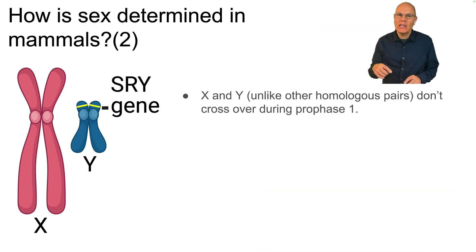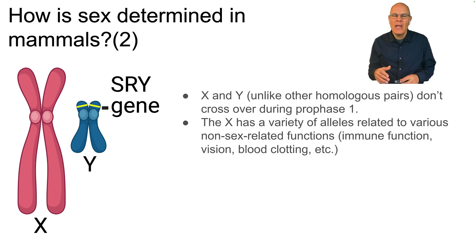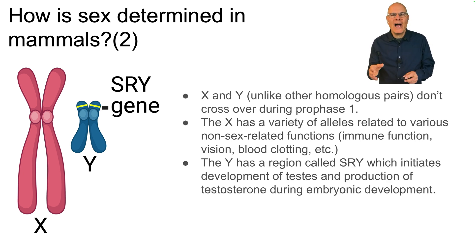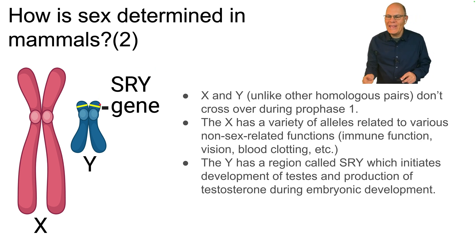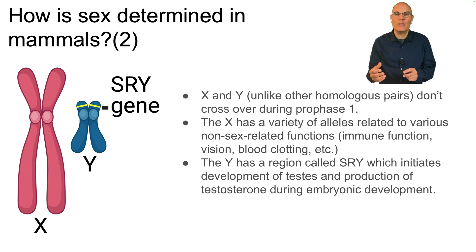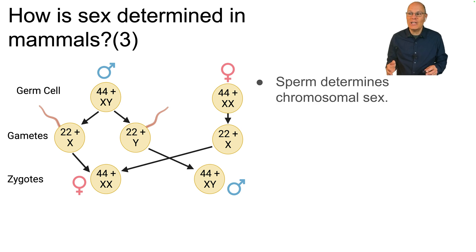Unlike those homologous pairs, the X and Y don't cross over and swap pieces of DNA. The X is a normal chromosome with a variety of alleles related to various non-sex-related functions, including immune function, vision, blood clotting, and so on. The Y has a region called SRY, indicated by a yellow bar, and that initiates the development of the testes during early embryonic development.